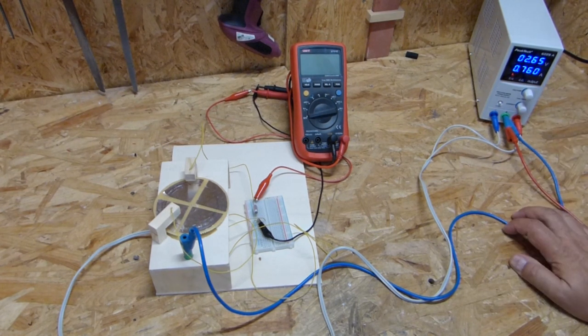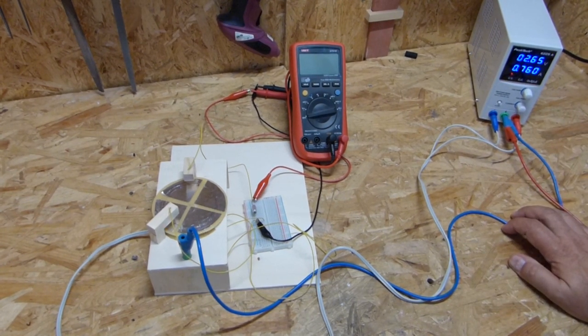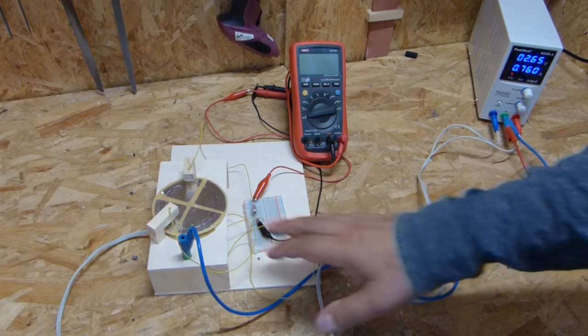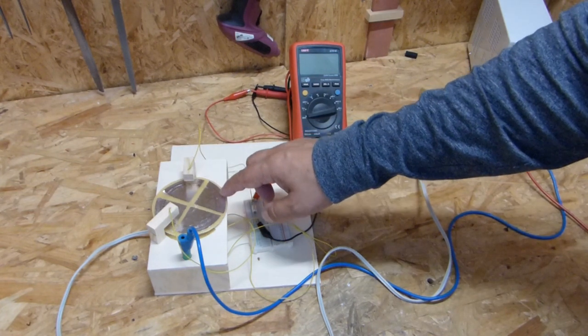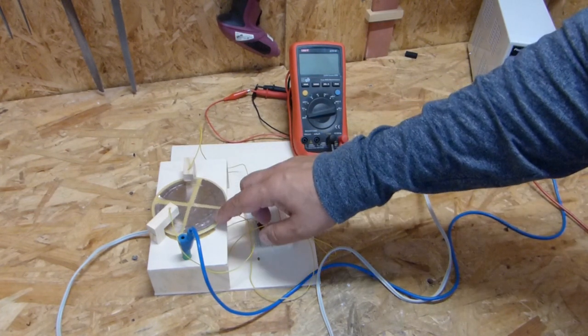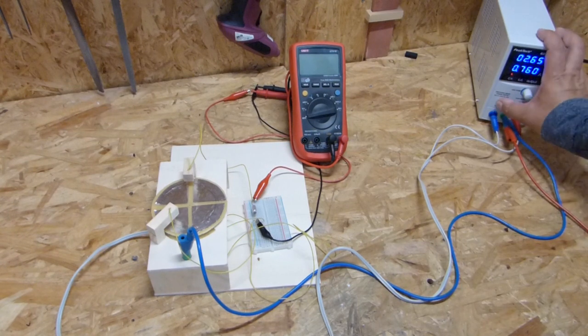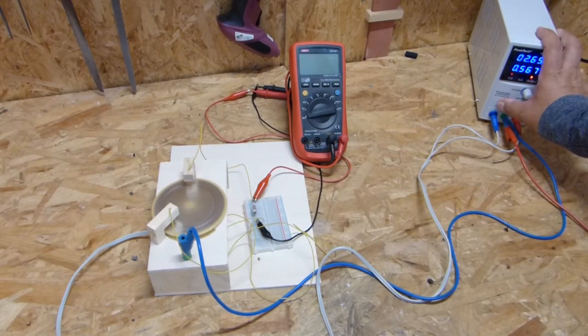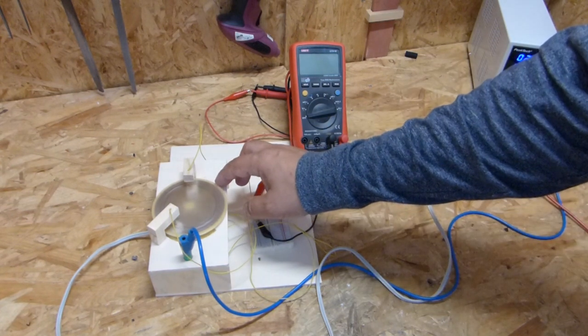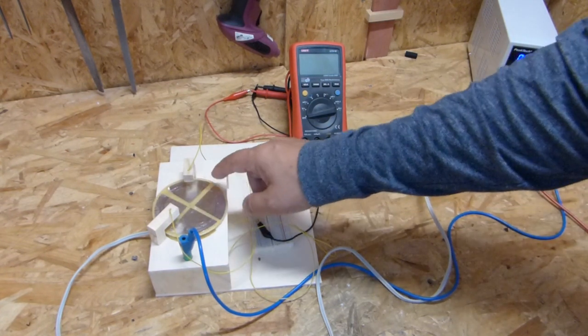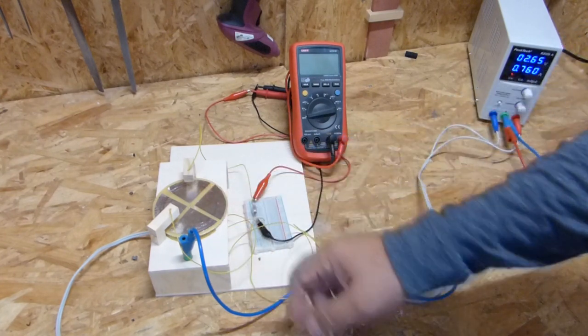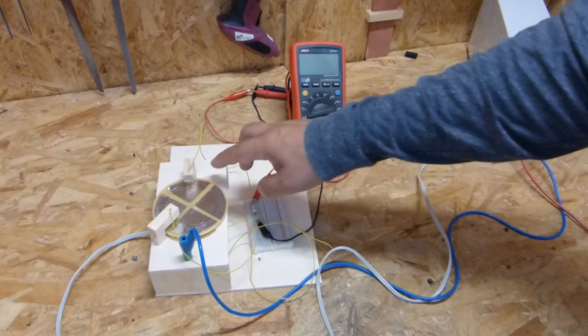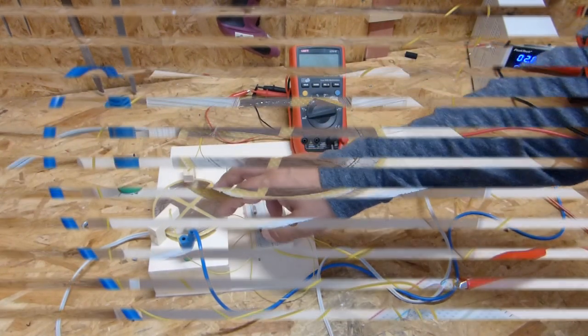So to be sure that this concept is not only working theoretically but also practically, I made some kind of test setup here, you can see. And here I have a rotating disc. I can switch it on, just driven by motor. And you can see I have some segments on this disc. This is just aluminum foil. And these segments are isolated from each other. And I have two brushes here.